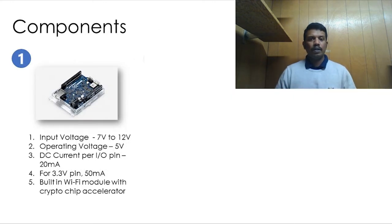Now let's discuss the components and the specification. The first one is the Arduino Uno Wi-Fi Rev2. It has a built-in Wi-Fi module with a crypto chip accelerator. The DC current provided per input output pin is 20mA, whereas for the 3.3V pin it is 50mA. Its operating voltage is 5V, whereas it can accept an input voltage starting 7V to 12V.